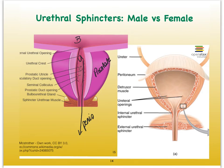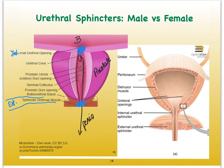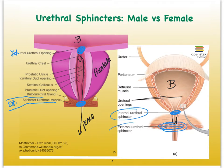In the female, the two sphincters are separated by a greater distance. At the junction of the bladder with the urethra, we have the internal urethral sphincter, and then at the level of the urogenital diaphragm, we have the external urethral sphincter.